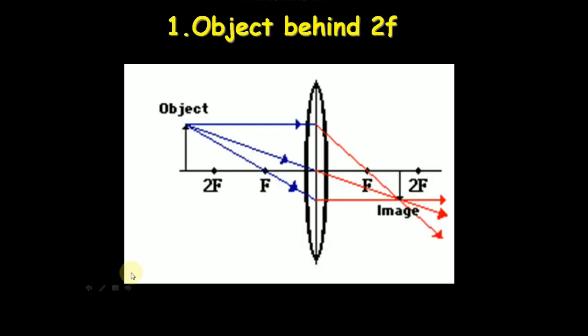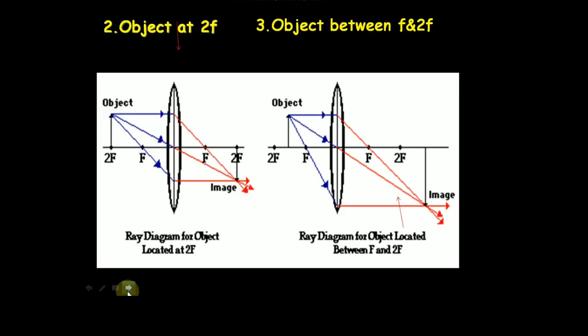We are seeing first image: object beyond 2f. Second image is object at 2f, ray diagram for object located at 2f. Ray diagram 3: object between f and 2f. You will carefully observe the formation of images.